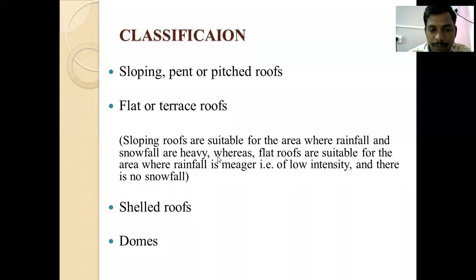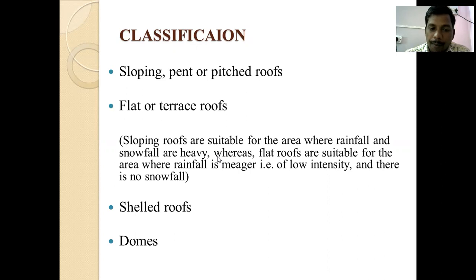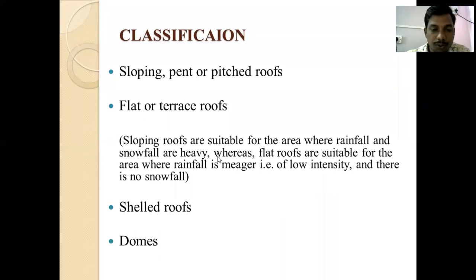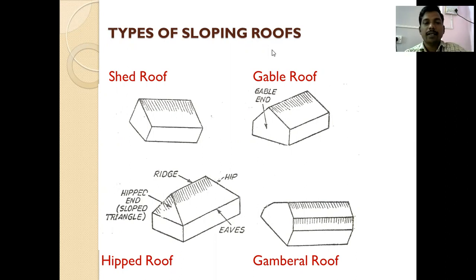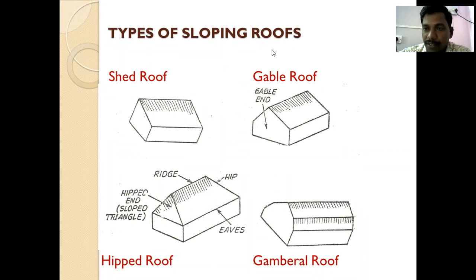Shelter roofs and domes are used to achieve architectural beauty and elegant appearance. You may have seen domes provided in temples and mosques. Different types of sloping roofs exist according to the provision of slope — whether slope is provided towards one side, two sides, two sides with a step, or four sides.